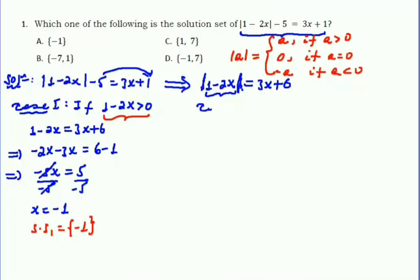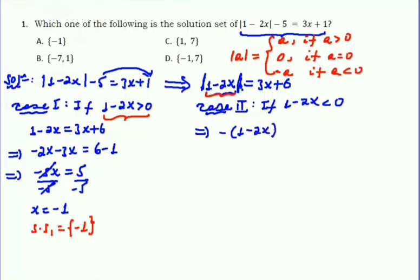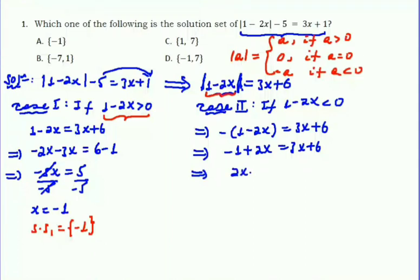In Case 2, we assume the expression 1 minus 2x is negative, meaning 1 minus 2x is less than zero. By definition, the absolute value becomes the negative of 1 minus 2x, equal to 3x plus 6. Distributing the negative: minus 1 plus 2x equals 3x plus 6. Collecting like terms: 2x minus 3x equals 6 plus 1, so minus x equals 7, giving x equals minus 7.